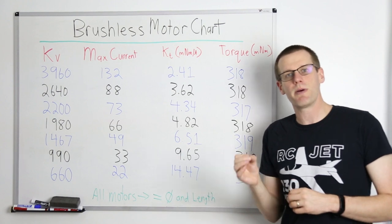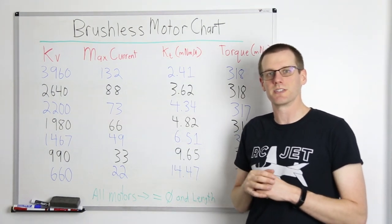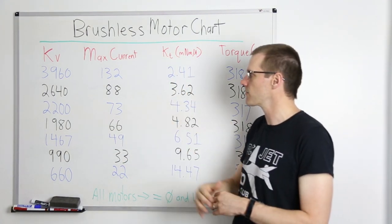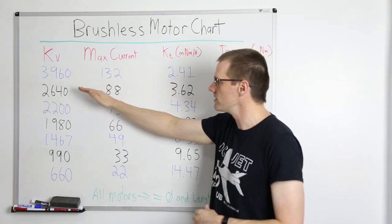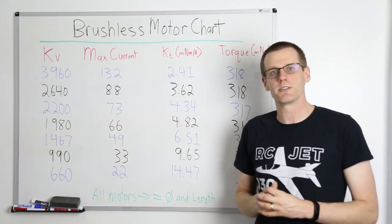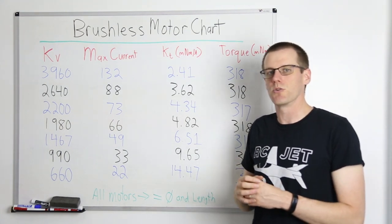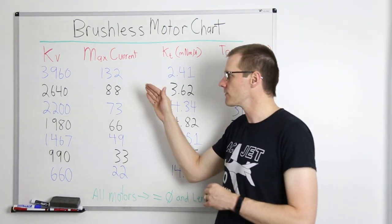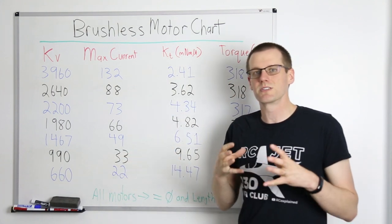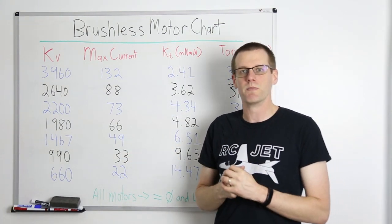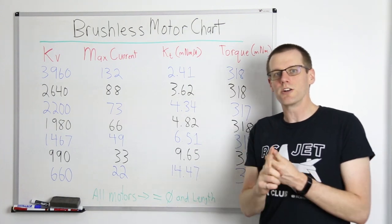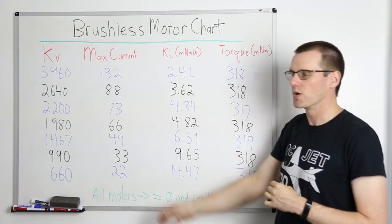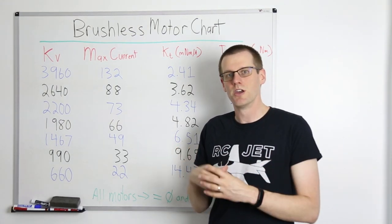If you look at the power potential the manufacturer specifies, that value is consistent for all motors — say 2000 watts for every one of them. The maximum RPM is also the same for every motor; if it's 60,000 RPM, all of these motors can deliver that same 60,000 RPM. So the wattages, torques, and RPMs are all the same at maximum potential across all these motors.